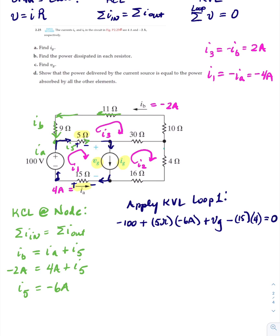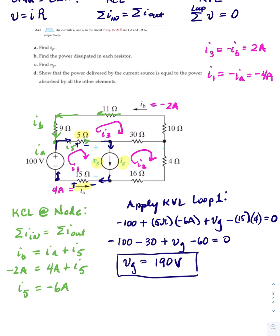Simplifying: minus 100 minus 30 plus V sub G minus 60 equals zero. Moving V sub G to one side and everything else to the other, we get V sub G is equal to positive 190 volts. So we have our answer for V sub G: 190 volts.